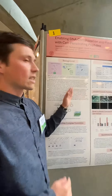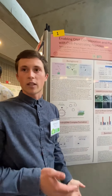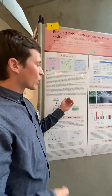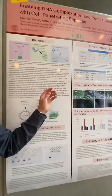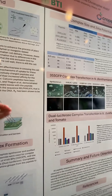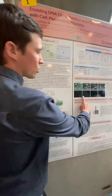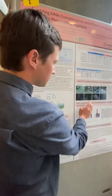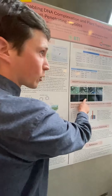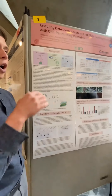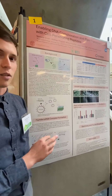We wanted to test whether these complexes could effectively deliver DNA to plant cells. First, we made our complexes with DNA including a GFP reporter gene, and we imaged them with fluorescent microscopy — these images are shown here. Because no fluorescence was observed with our complexes, that shows that our gene was not expressed, which means our gene did not enter the plant cells.